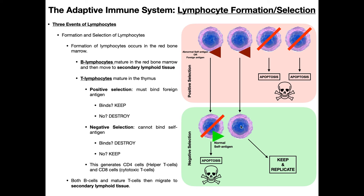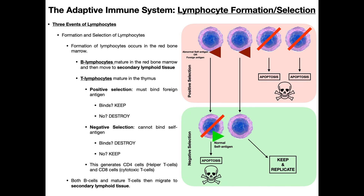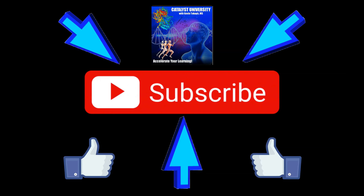There's also a similar process for natural killer cells, or NK cells. Natural killer cells are not part of the adaptive immune system — they're part of the innate immune system — but they still should not be able to bind and activate to self-antigen. Hopefully the process of clonal selection makes sense. To really understand this, you have to understand the difference between a self-antigen and an abnormal self-antigen or foreign antigen. Please make sure to like this video and subscribe to my channel for future videos and notifications. Thank you.